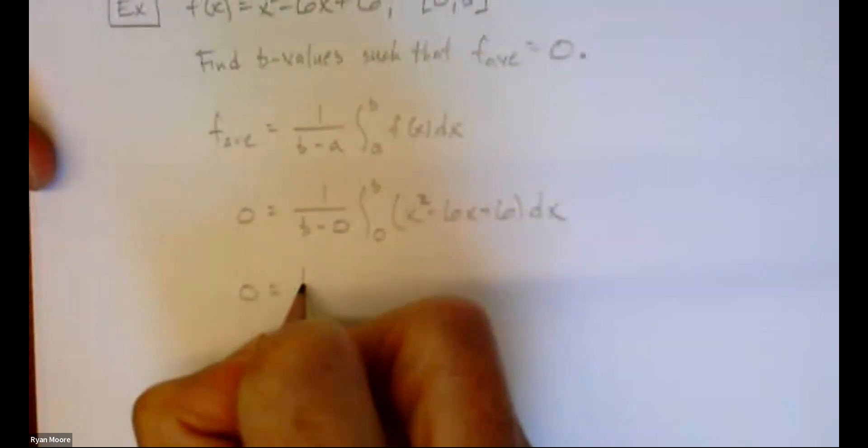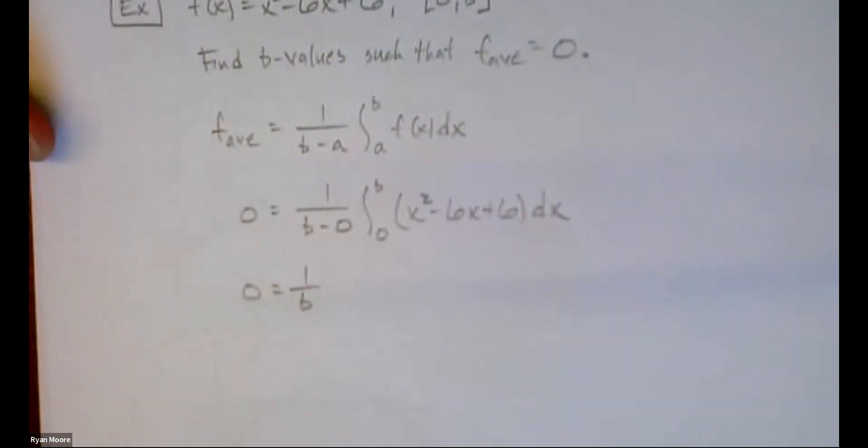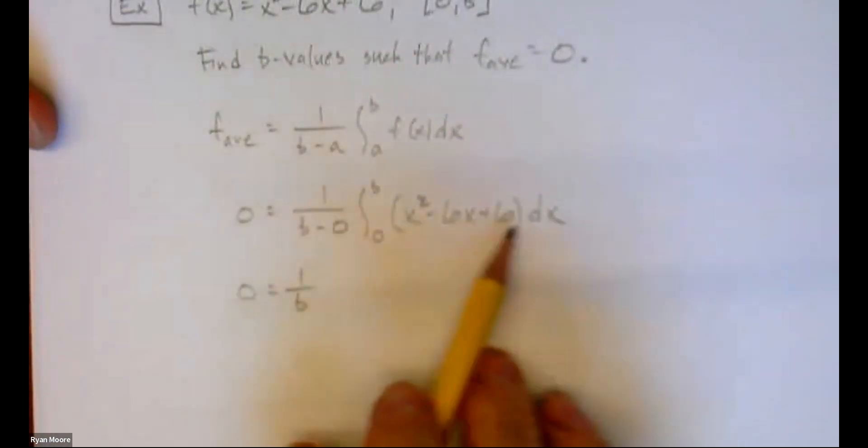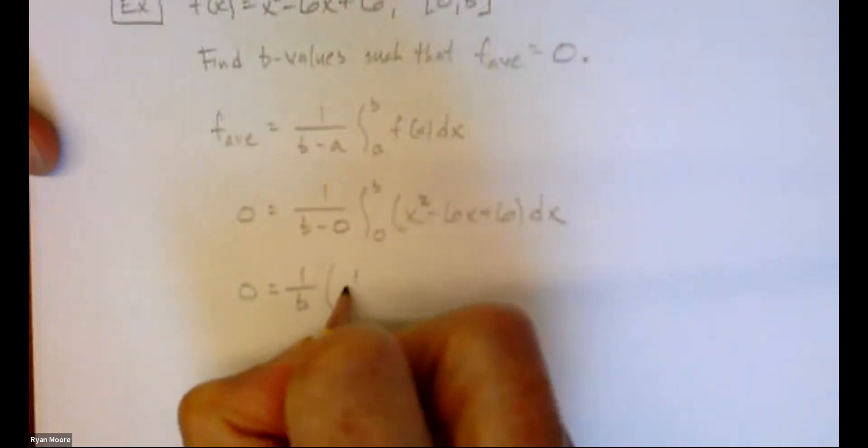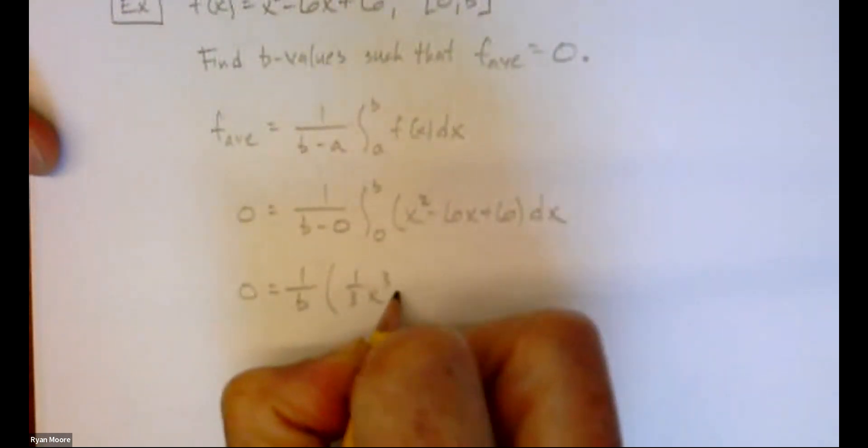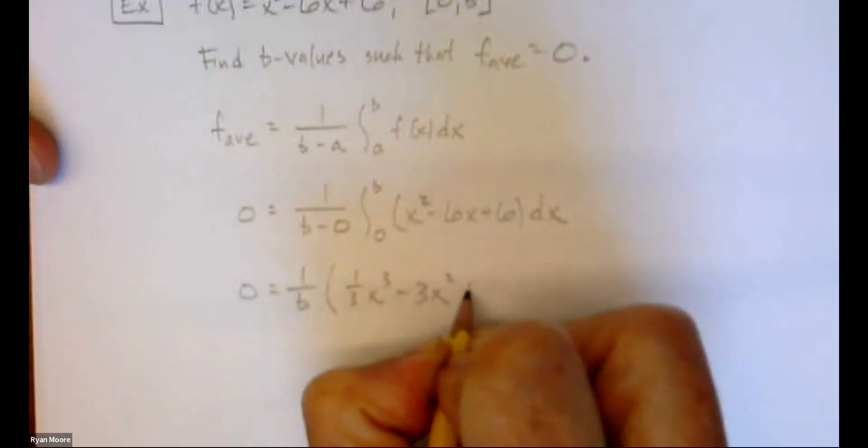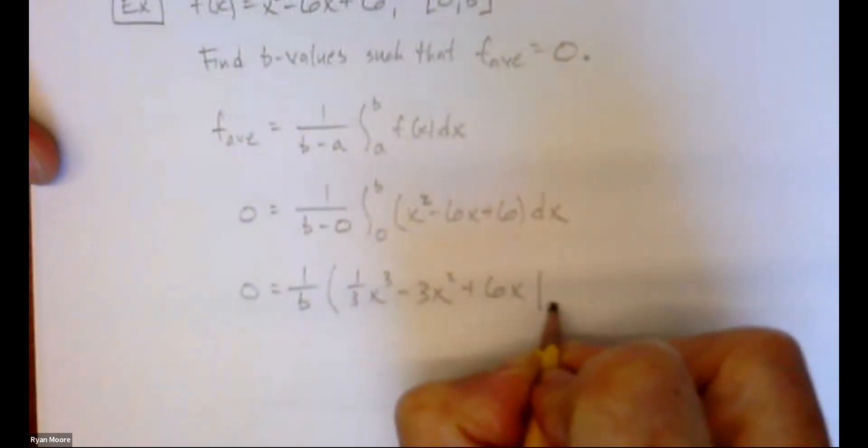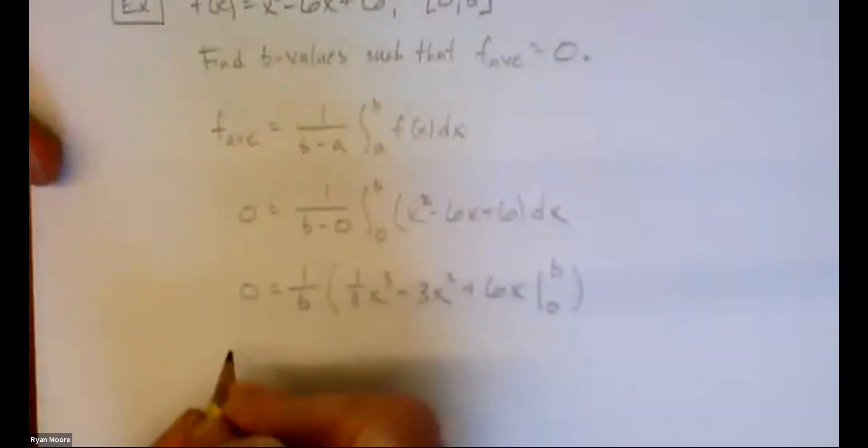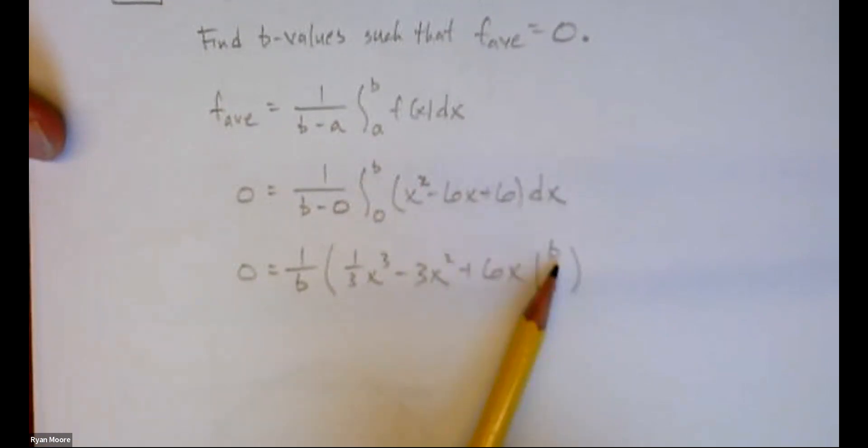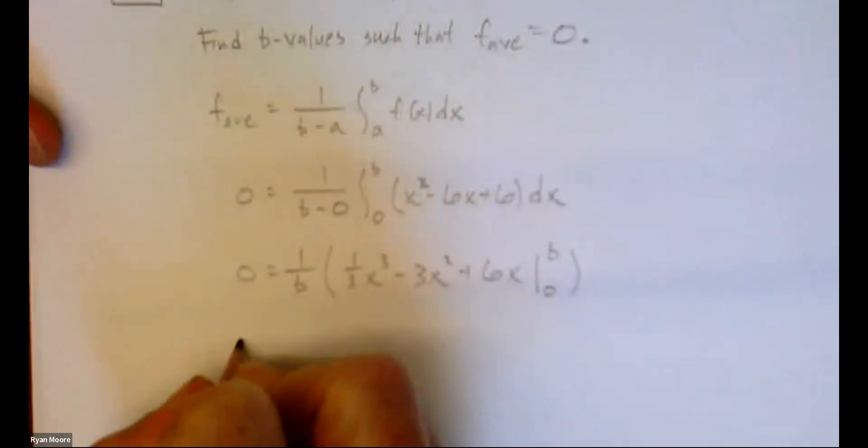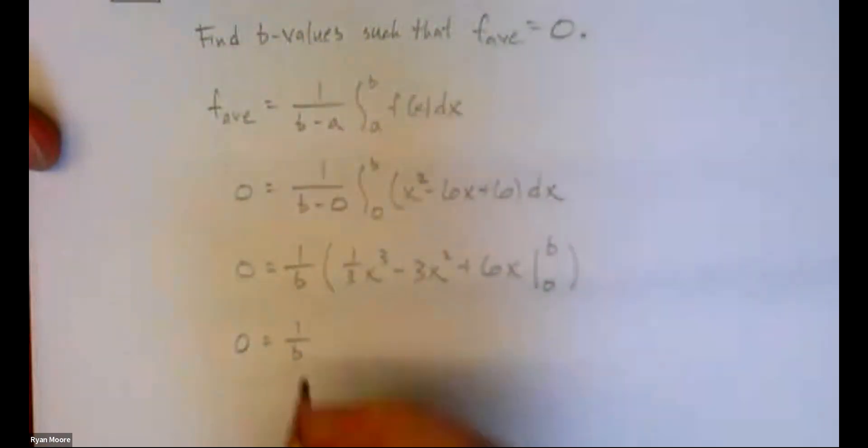How are we going to start? Well, maybe we can clean this up. Just call it 1 over b, right? And let's do this integral. We can do that. So we're going to have one third x cubed minus 3x squared plus 6x from 0 to b. Now, we'll continue by plugging these in. We'll plug in b for all the x's as if it was a number. That's what we do, right? Subtract, plug in 0, and we'll just kind of see what equation comes out of this.